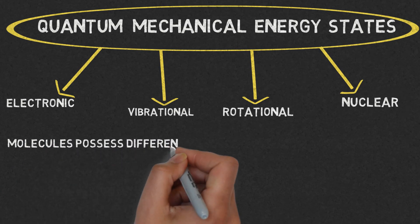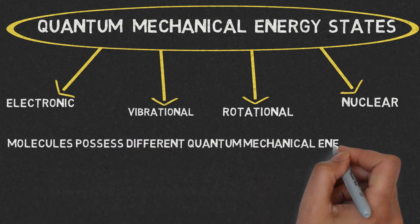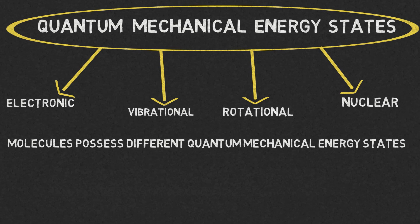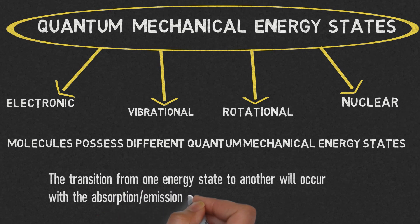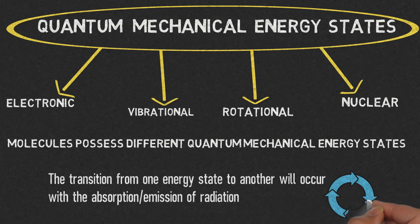Molecules possess different quantum mechanical energy states. The transition from one energy state to another will occur with the absorption or emission of radiation. This means the energy states change during absorption and emission.